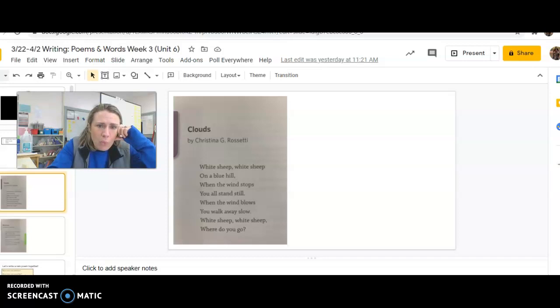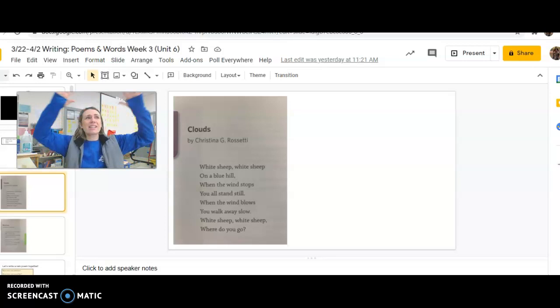White sheep, white sheep, on a blue hill. Wait a second. Why is it talking about sheep now? Oh, it doesn't really mean sheep. It's kind of saying that the clouds look like a bunch of white sheep. But what's the blue hill? Oh, the sky. Okay, so the sky is like this blue hill with these white sheep.